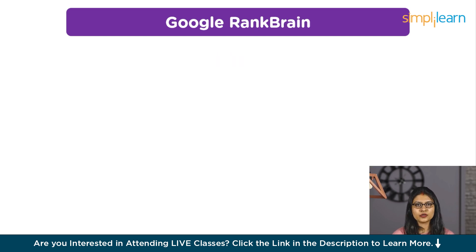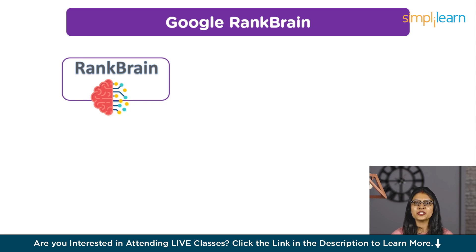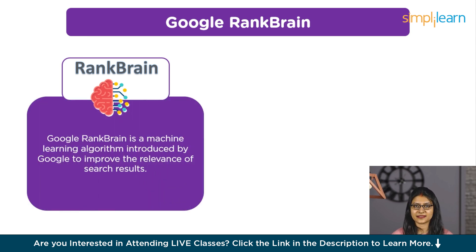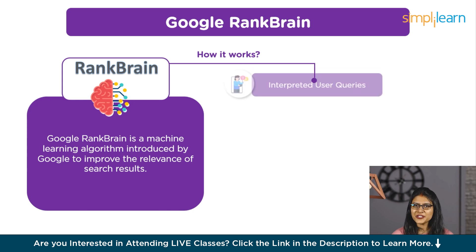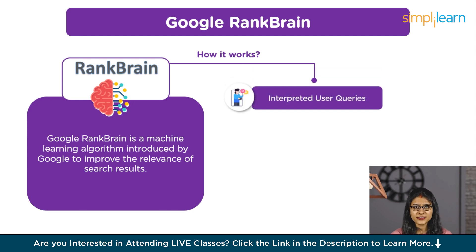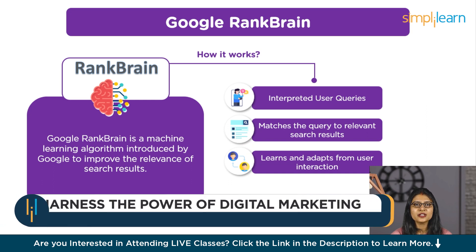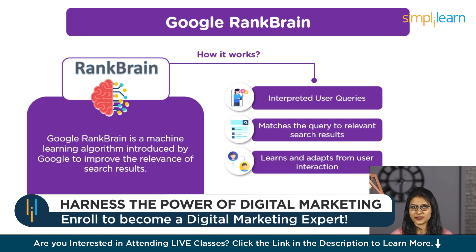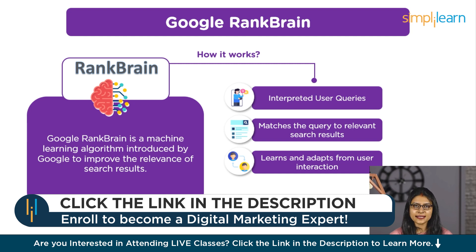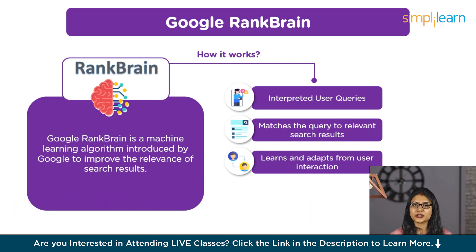Google RankBrain is a machine learning algorithm introduced by Google in 2015 to improve the relevance of search results. RankBrain, a part of Google's search algorithm, focuses on interpreting user queries — especially ambiguous ones — by analyzing various factors like context, search history, and user behavior. Once it understands the user's intent, RankBrain matches the query to relevant search results using keywords, synonyms, and related terms. It continuously learns and adapts from user interactions to refine its understanding of intent and improve result relevance. RankBrain collaborates with other ranking signals like PageRank and content quality to determine web page rankings, enhancing Google's ability to interpret user queries effectively.